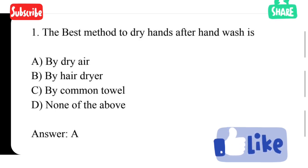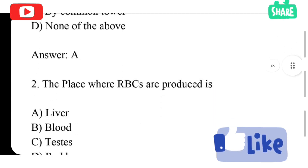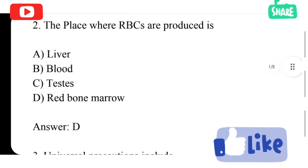Next question. The place where RBCs are produced is option A liver, option B blood, option C testis, option D red bone marrow. Option D is correct answer. Red bone marrow is where RBCs are produced.